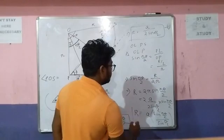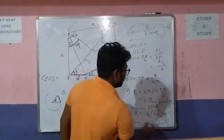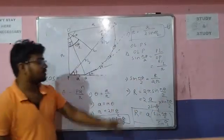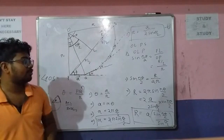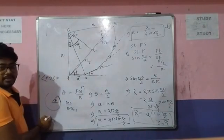Substituting r = a / (2·sin(θ/2)) into R = 2r·sin(Nθ/2), the 2s cancel, and we get the resultant amplitude: R = A·sin(Nθ/2) / sin(θ/2).